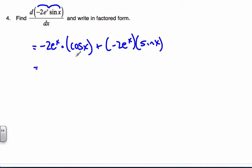And when I look at this, I can pull out a factor of negative 2 e to the x, and I'm left with cosine x plus sine x. And that is in factored form.